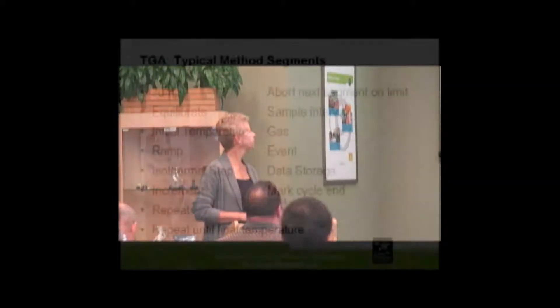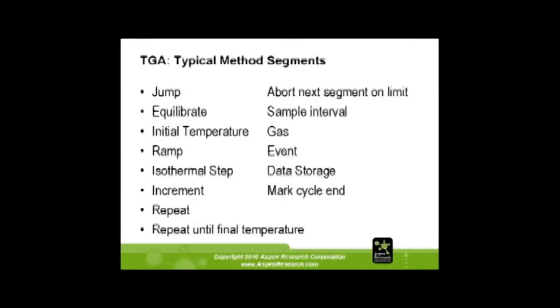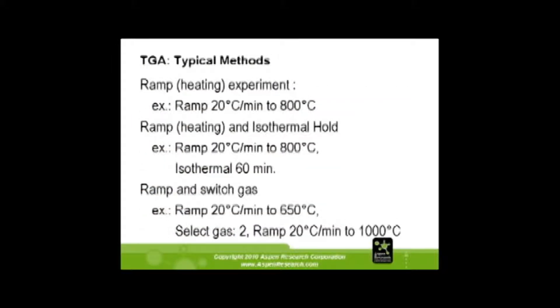Typical methods are quite the same as what they are for DSC. There are different kinds of ramps — you can do a straight ramp up to 800 degrees, you can ramp and isothermal for a period of time, or you can ramp and switch gases and then hold at temperature over time.